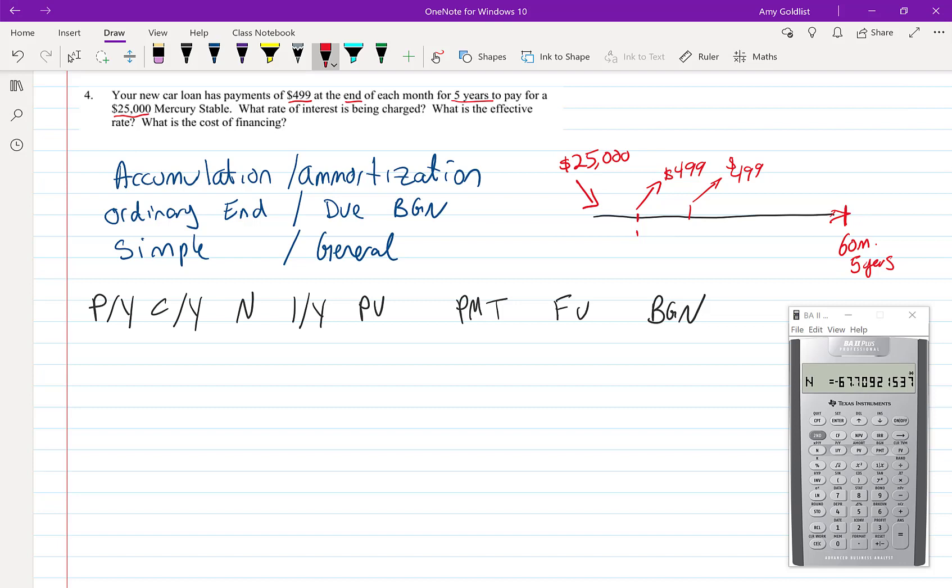Every month, the amount of money we owe on that car is shrinking. That makes this one also an amortization. We are always making our payments at the end of each month and it says that right in the problem. So it is an ordinary annuity. Finally, simple general.